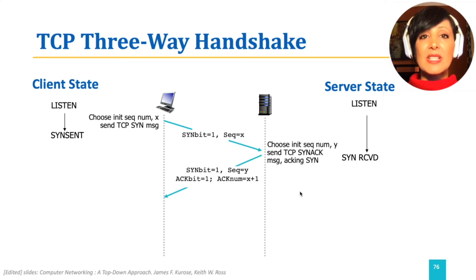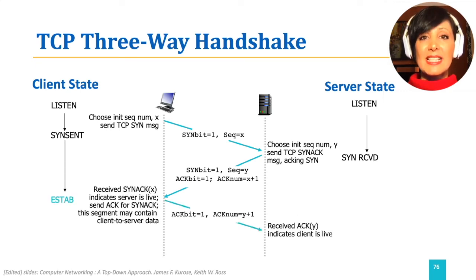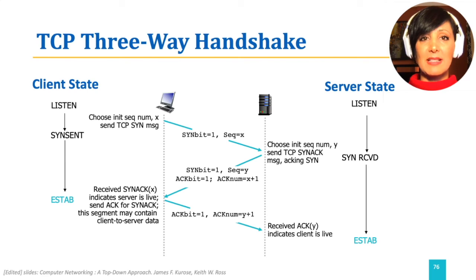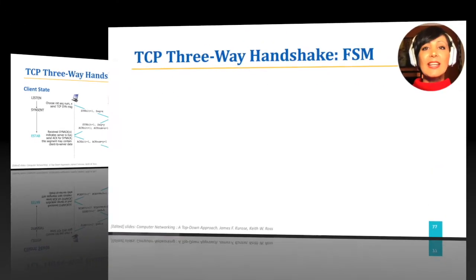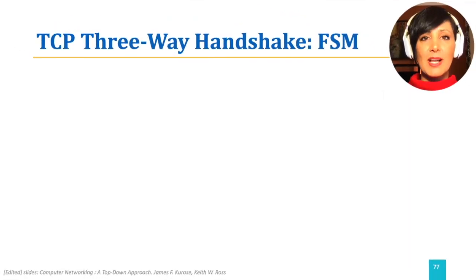The client receives the segment, sets the acknowledgement number to Y+1, sets the ACK bit, and sends the third segment. The connection at the client side is considered established at the send event of the third segment, and at the server side at the receive event of the third segment. We can illustrate the three-way handshake process for connection establishment of TCP using an FSM.